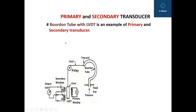we are seeing the Bourdon tube with LVDT as an example of primary and secondary transducers. This question mark type tube which you are seeing is a Bourdon tube, and this structure is an LVDT — that is, Linear Variable Differential Transformer. Since it has a transformer-like structure, that is a primary winding and two secondary windings, it is called a transformer.